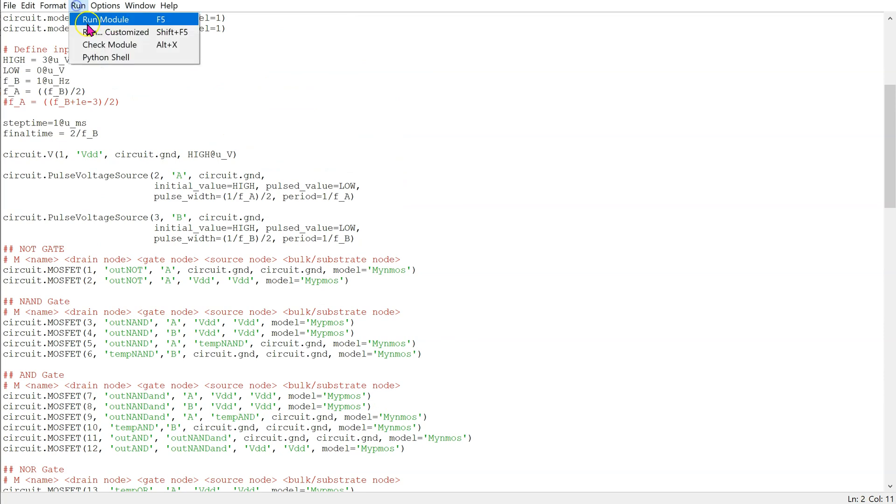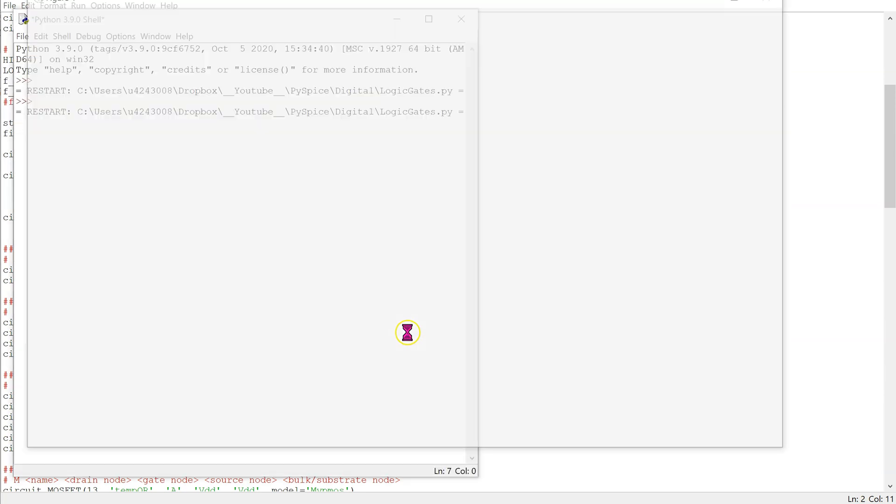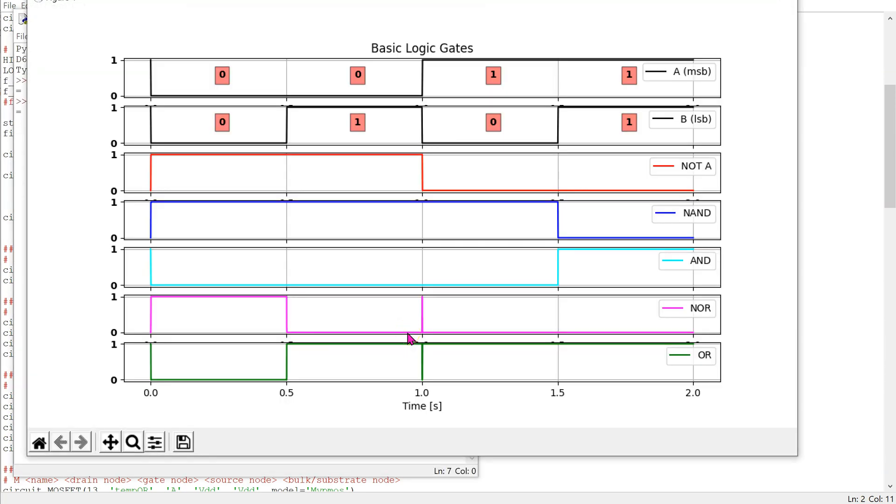When we run this code, we can see the outputs, which verify the truth table of the logic gates. For instance, for the AND gate, we can see that the inputs cycle through the four rows of the truth table, 0 0, 0 1, 1 0 and 1 1. And the AND gate output is 1 only when A and B are 1.